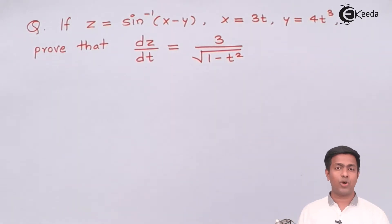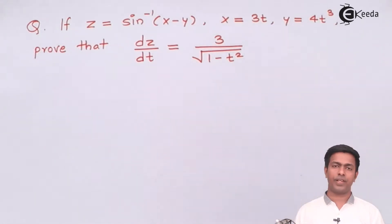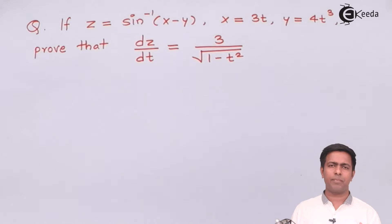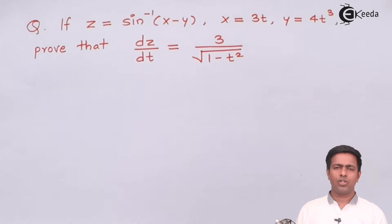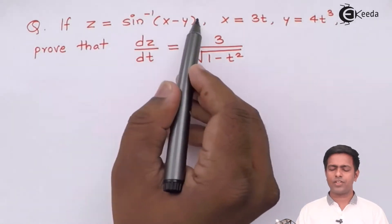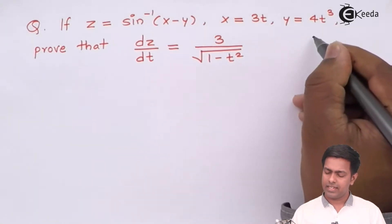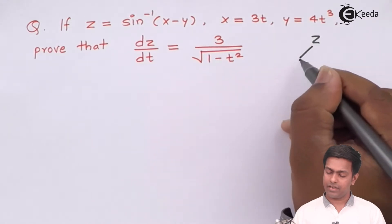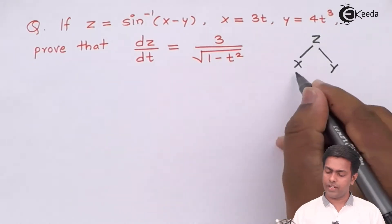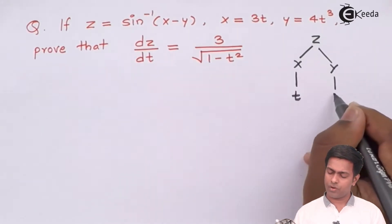This type of function is called a composite function, so we can say that z is a function of t. Whenever we have a composite function, we follow the tree diagram because it makes solving the problem much easier. In the tree diagram, z is a function of x and y, x is a function of t, and y is also a function of t.